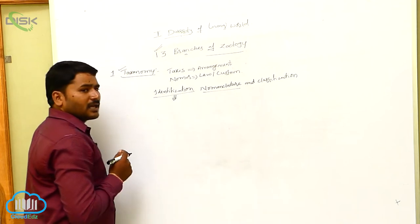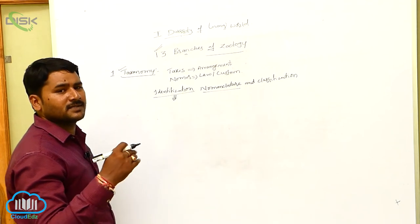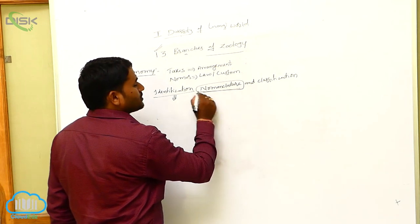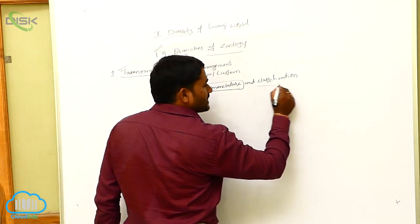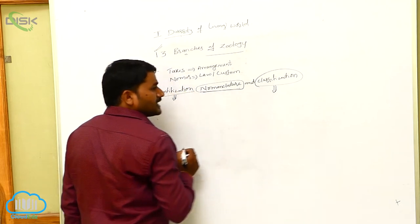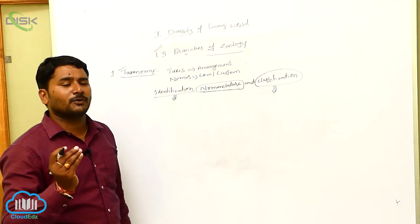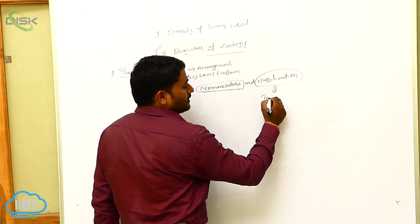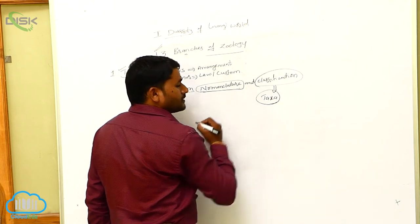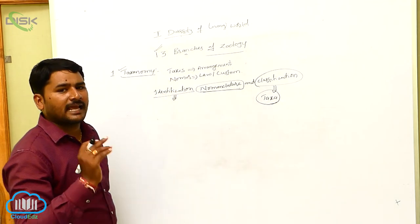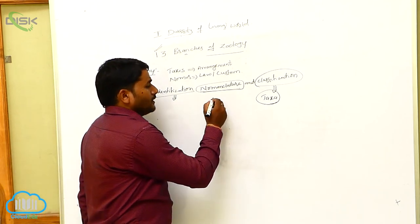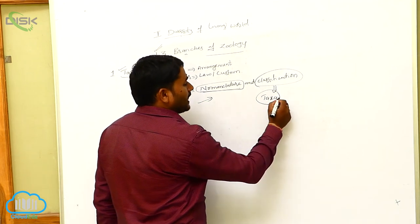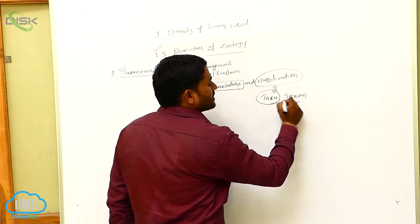Nomenclature is a process in which the organism is given a special name. The nomenclature process involves giving names to the individuals. Next, classification. Classification means arranging an animal based upon its characters into a specific taxon. Taxa or taxon. Taxon is a singular word. When you identify a new animal, we have to give a new scientific name and we have to kept it in taxa or taxon.